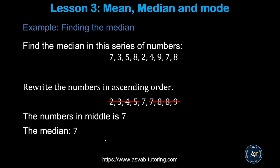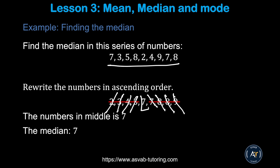The next topic we'll learn is median — how to find the median. Median is the mid value of a series of numbers. If you want to find the median, the first thing you have to do is write the numbers in ascending or descending order — that means smallest to greatest or greatest to smallest. Here we have: 2, 3, 4, 5, 7, 7, 8, 8, 9. You cross out from the first and last, working inward, until you reach the middle. So the median is 7.